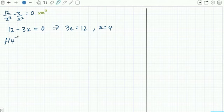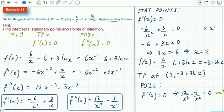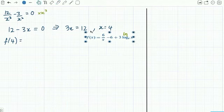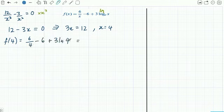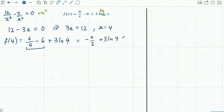The function itself at x = 4 is going to be 6/4 - 6 + 3ln(4). If you do a little simplification for the fraction part, this actually turns into -9/2 + 3ln(4).